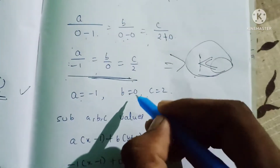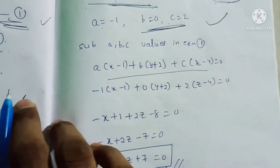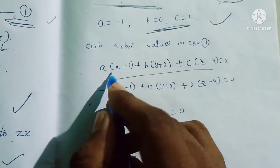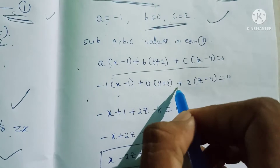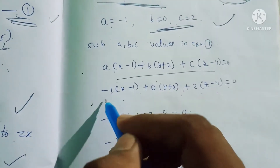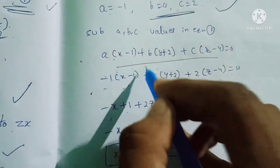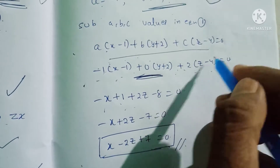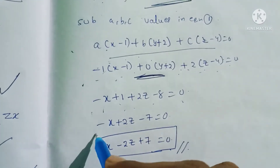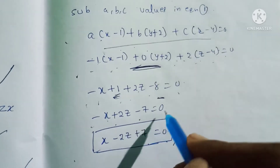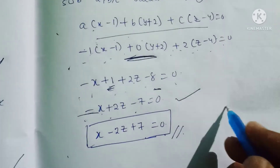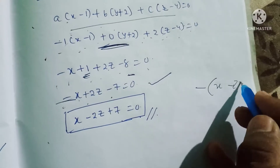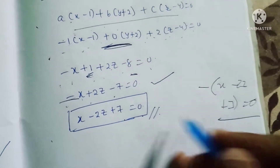Substituting a = -1, b = 0, c = 2 into equation 1: -1(x - 1) + 0(y + 2) + 2(z - 4) = 0, giving -x + 1 + 2z - 8 = 0, so -x + 2z - 7 = 0. Multiplying by -1: x - 2z + 7 = 0. That is the equation of the plane.